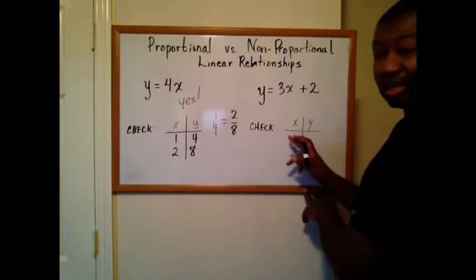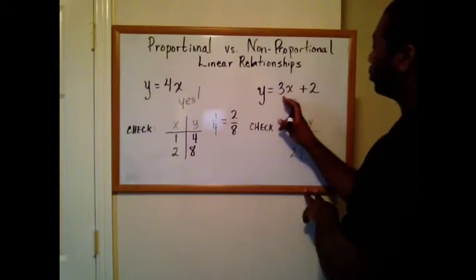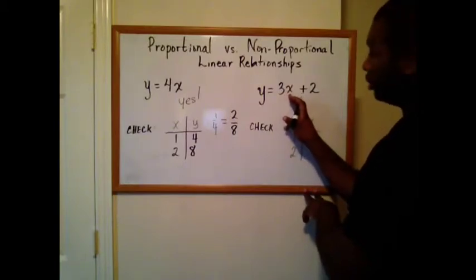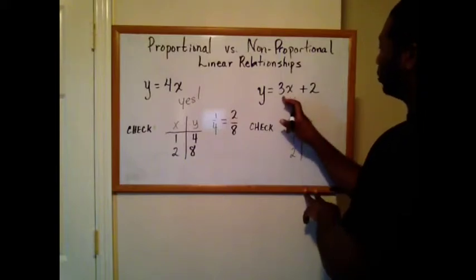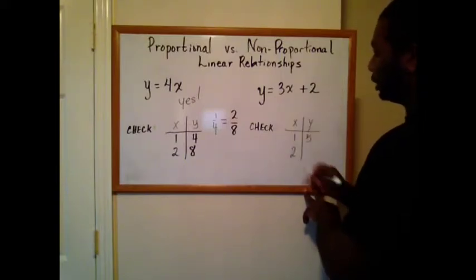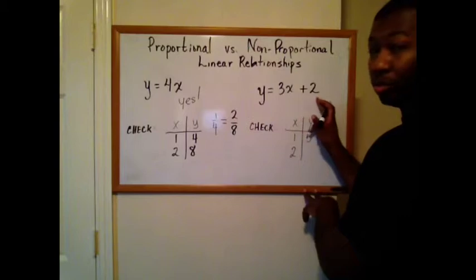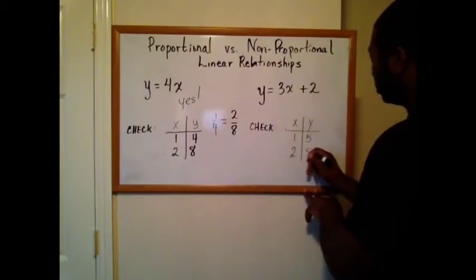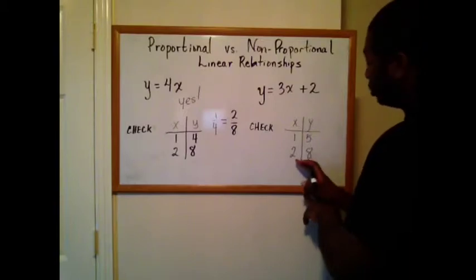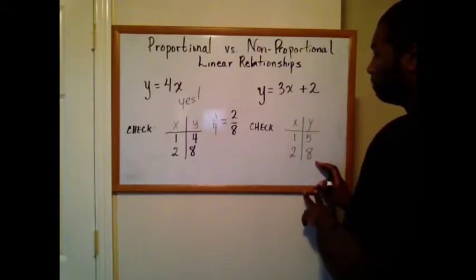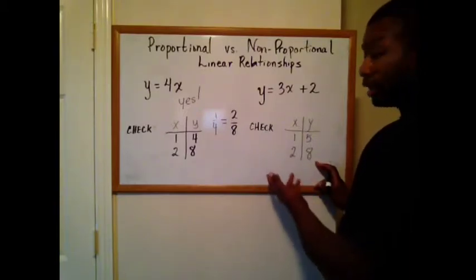If I let x equal one, three times one is three plus two more, five. Over here, three times two is six plus two more is eight. So now I have two points on this line. One five is a point. Two eight is another point.